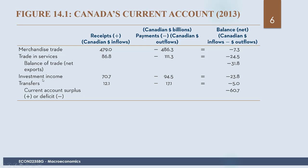In terms of investment income, Canadians received $70 billion from assets they own in other countries, while foreigners owning Canadian assets received $94.5 billion — giving a deficit of $23.8 billion. Looking at transfers, more money was sent by Canadians abroad than received from abroad, giving negative $5.0 billion. The overall current account balance is negative $60.7 billion — a deficit.